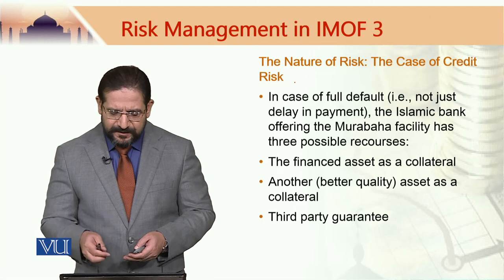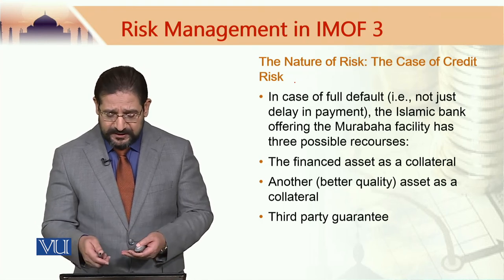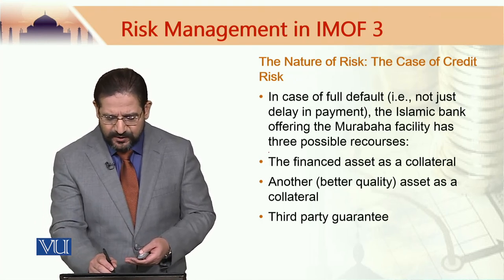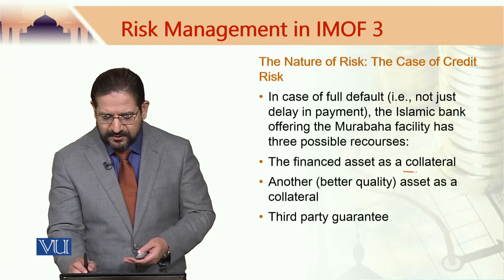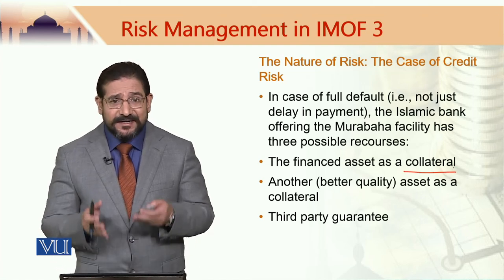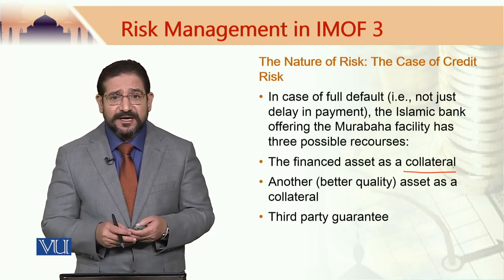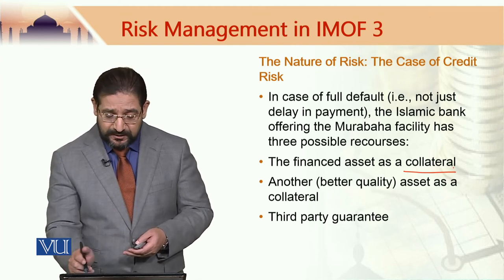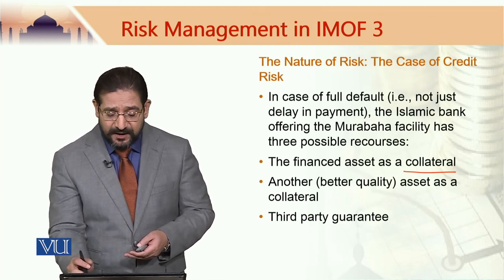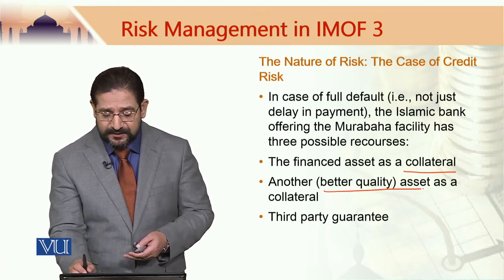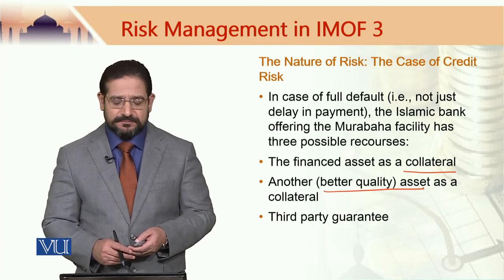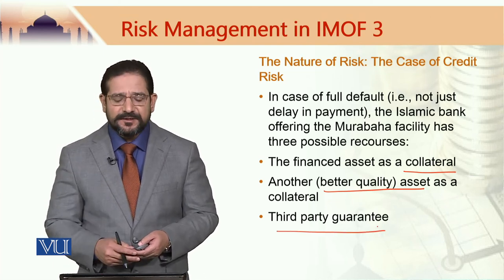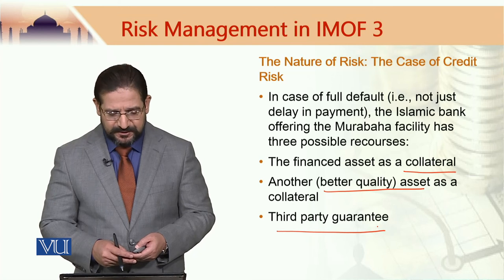The difference between Islamic and conventional banks facing credit risk is in the details. In case of a full default, an Islamic bank may mitigate that risk by having the financed asset as collateral, having a lien on it, asking for a better quality asset as collateral, or using a third-party guarantee.